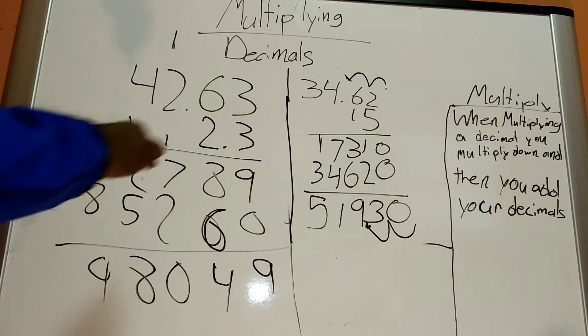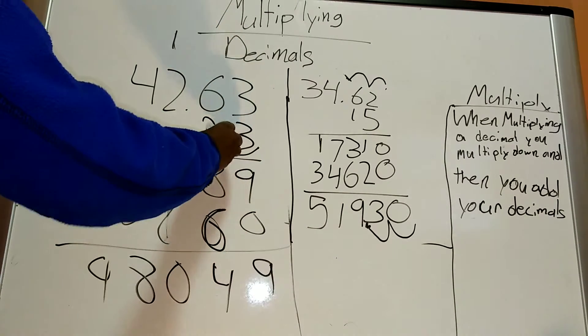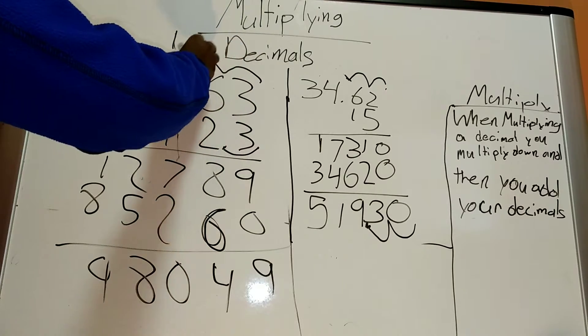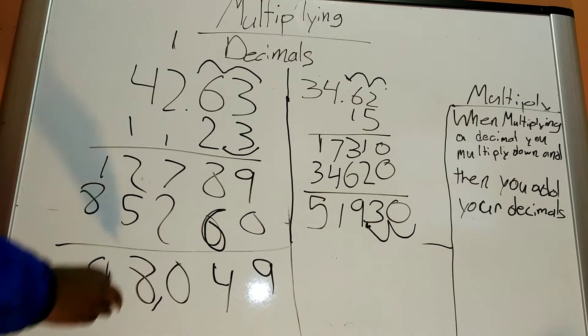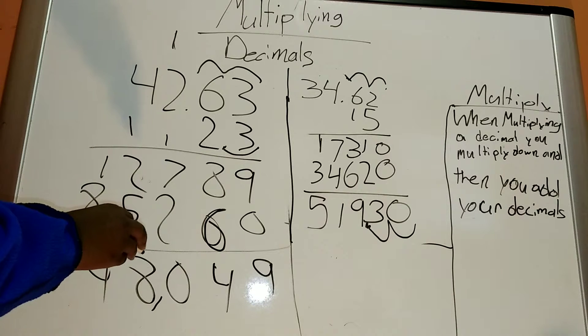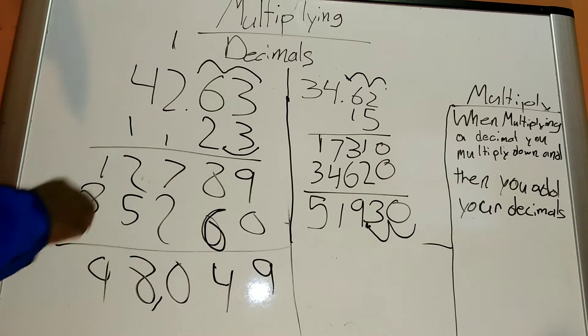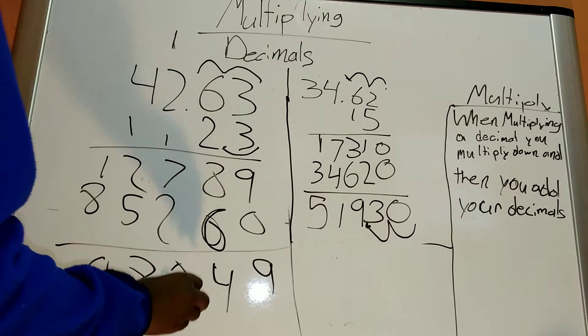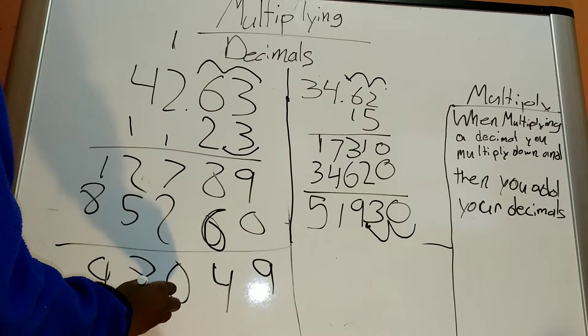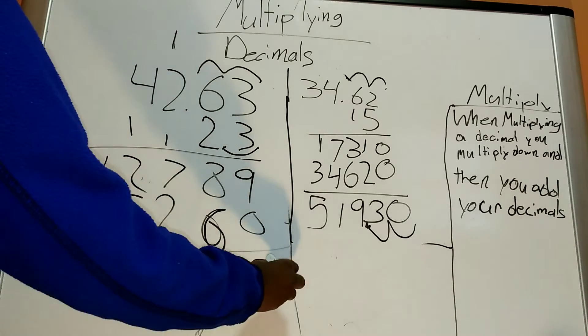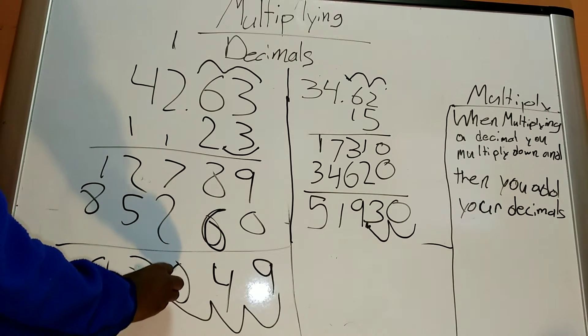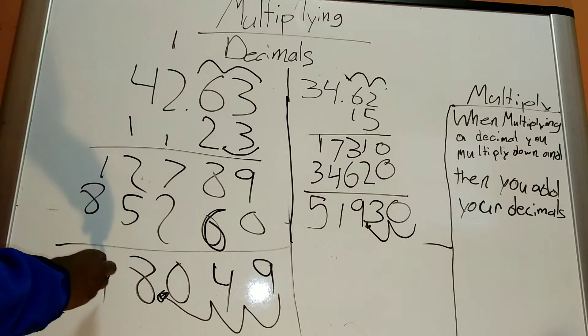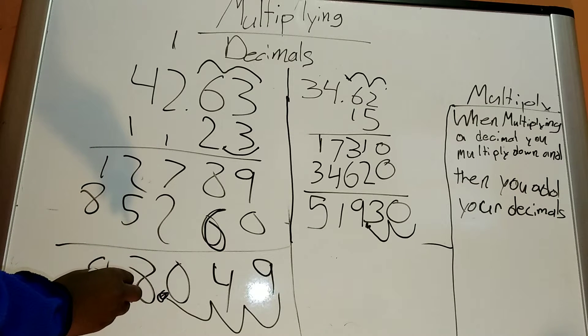So, after you get that, now we notice that this decimal skips your place by 1, and this skips it by 2. So, 1 plus 2 is obviously 3. So instead of this being 98,049, this is... Instead of a line right there, a comma, you have 1, 2, 3... Places. So then you would actually have 98,000 and 49,000.